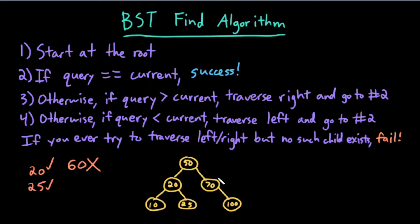And one last one — let's try looking for the number 5. Is 5 equal to 50? No, it's less than 50, so I traverse left. Is 5 equal to 20? No, it's less than 20, so I traverse left. Is 5 equal to 10? No, it's less than 10, so I traverse left. There's no left child, therefore 5 cannot exist in this tree.